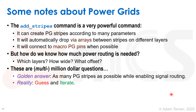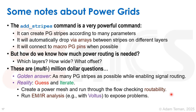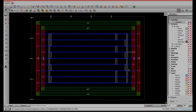The reality is that you're going to guess and iterate. What you do is create a power mesh, run through the flow, and check routability to see if the power mesh can route. You'll run EMIR analysis - for example the tool Voltus will run EMIR analysis and expose problems. There are early rail analysis flows and post-layout analysis flows, which are very important tools. If we find problems, we iterate. This is why floor planning is a long process that takes a long time for back-end engineers to set up.